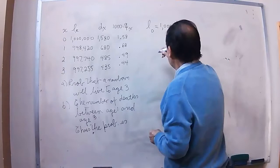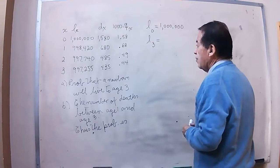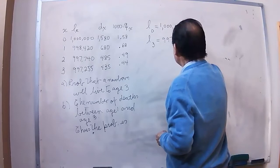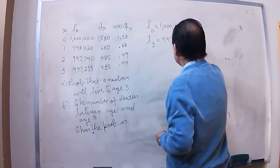They are asking us if we live to age 3. Age 3 will be living, in other words, persons living at age 3. As you can see, this is the number of persons living, and this is the age. So at age 3 we have the number 997,255.